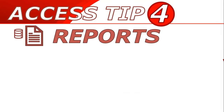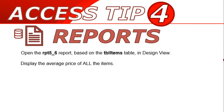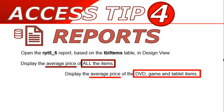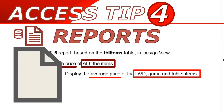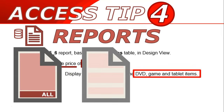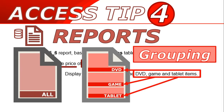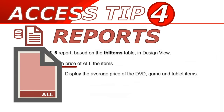The fourth tip is about reports. You can be asked to display the average price for all items, or to display the average price for DVD, game, and tablet items separately. Those are two very different questions — both ask for the average price, but the first is for all items and the second is for each individual category. For the 'all items' option, let's look at that first: you'll have the average price at the bottom for everything.